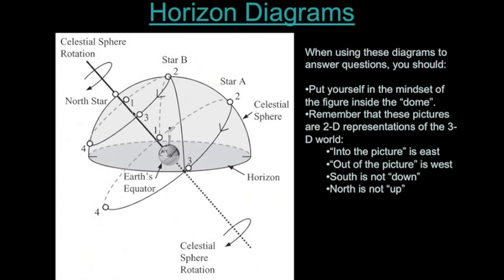This is a two-dimensional representation of a three-dimensional concept — the celestial sphere. Things that are into the screen are shaded with a dashed or lightly shaded line, and things out of the screen are a bold solid line. If this person were to face towards the north pole, they would see the north star above their northern horizon. In this diagram, the northern horizon is on the left, and the southern horizon is to the right.